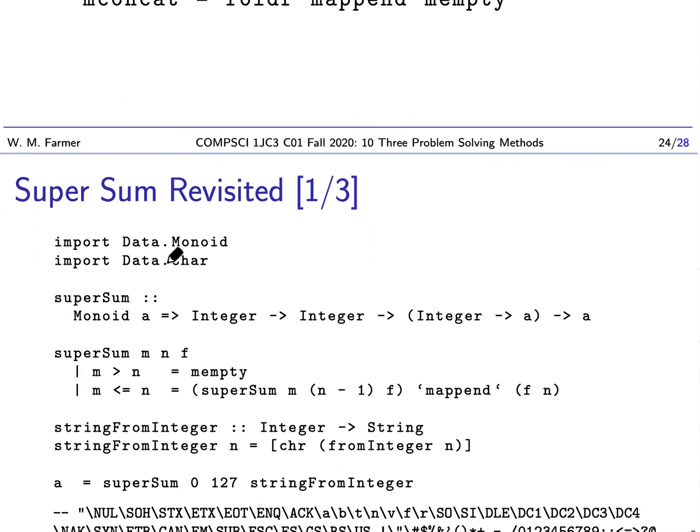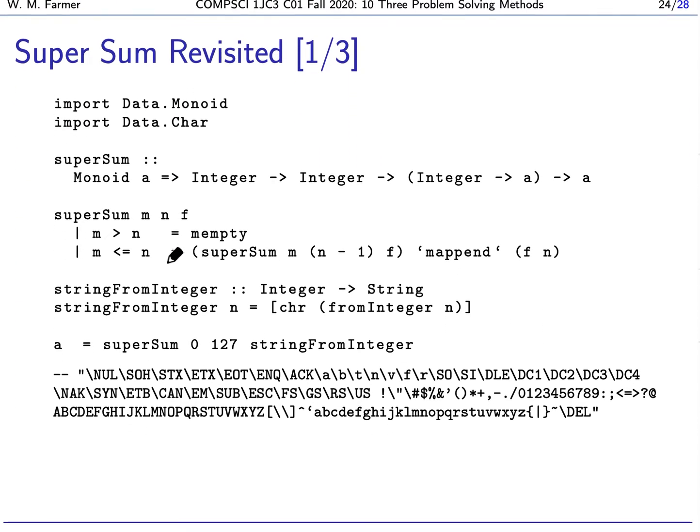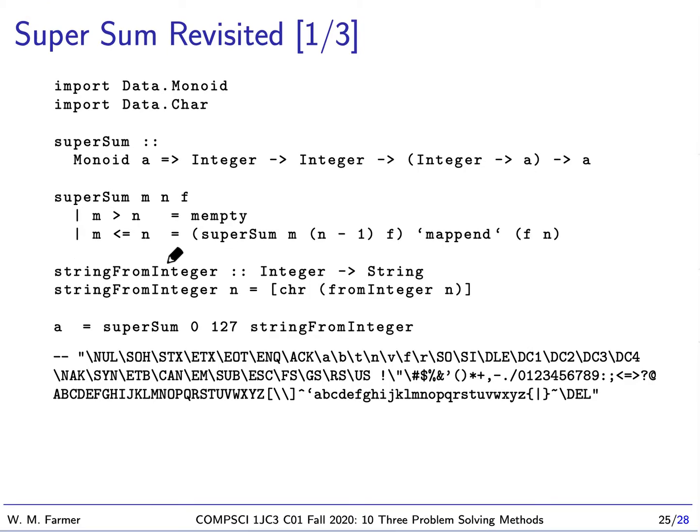So how would we actually do this to get the examples we just saw? Okay. So here's super sum. There it is. That's all it is. And notice this works for any type that's a monoid type. And so we got to import monoid and data dot monoid data dot char.